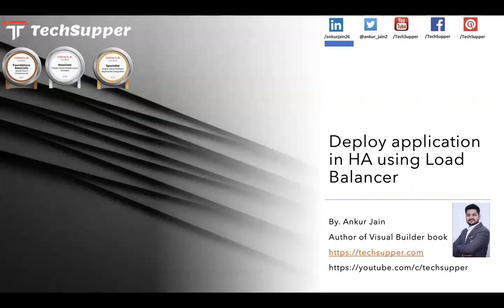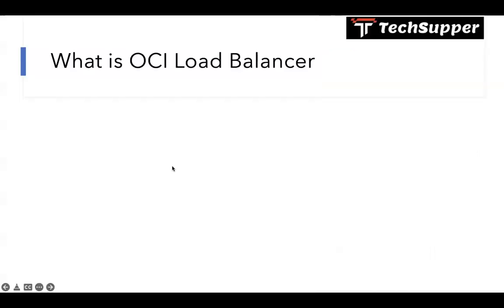Hi everybody, welcome back to my tech support channel. In this video we are going to look at how to deploy an application in HA mode - high availability mode - using OCI Load Balancer. We'll cover end to end: how to create a load balancer, how to add the backend sets, how to deploy an HTTP server on a compute instance, and how to access that via load balancer in high availability mode. Before I start, please subscribe to my channel to get regular updates.